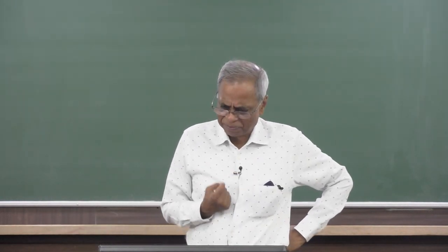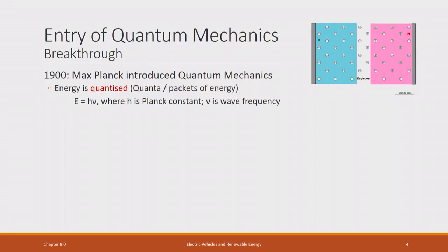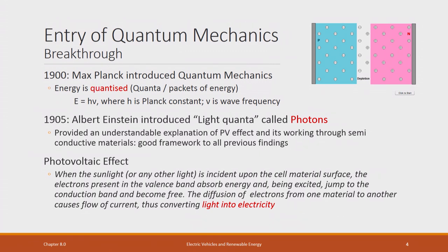A quantum electronics breakthrough took place in 1900, when Max Planck introduced Planck's constant and stated that photons carry a certain quanta of energy h·ν, where ν is the wave frequency. This defined how much electricity each solar photon could give rise to. In 1905, Albert Einstein introduced light quanta called photons, providing an understandable explanation of the photovoltaic effect and its working through semi-conductive materials.